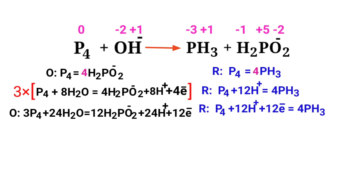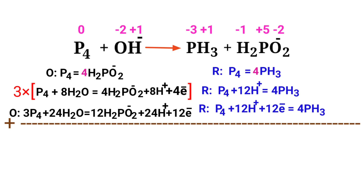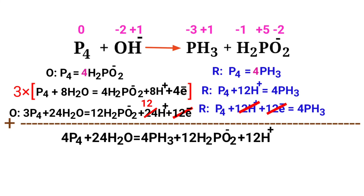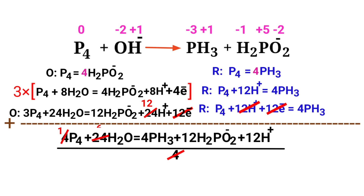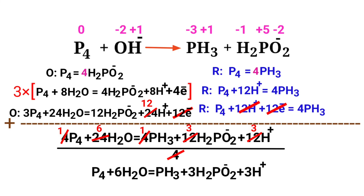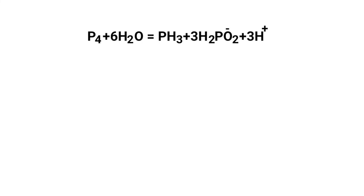Now add both half reactions together and cancel the same terms. If you observe the resulting equation, the common factor is 4, so divide the entire equation by a coefficient of 4.